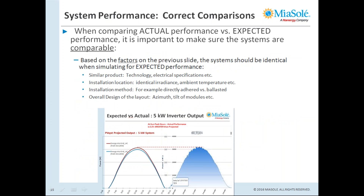When a customer says they're disappointed in system performance, we must understand what the expectations are and whether they were technically sound. We need to compare actual performance to expected performance modeled with the exact same system assumptions — the same tilt, azimuth, same product, same location. These factors are all critical to coming up with correct and comparable expectations.